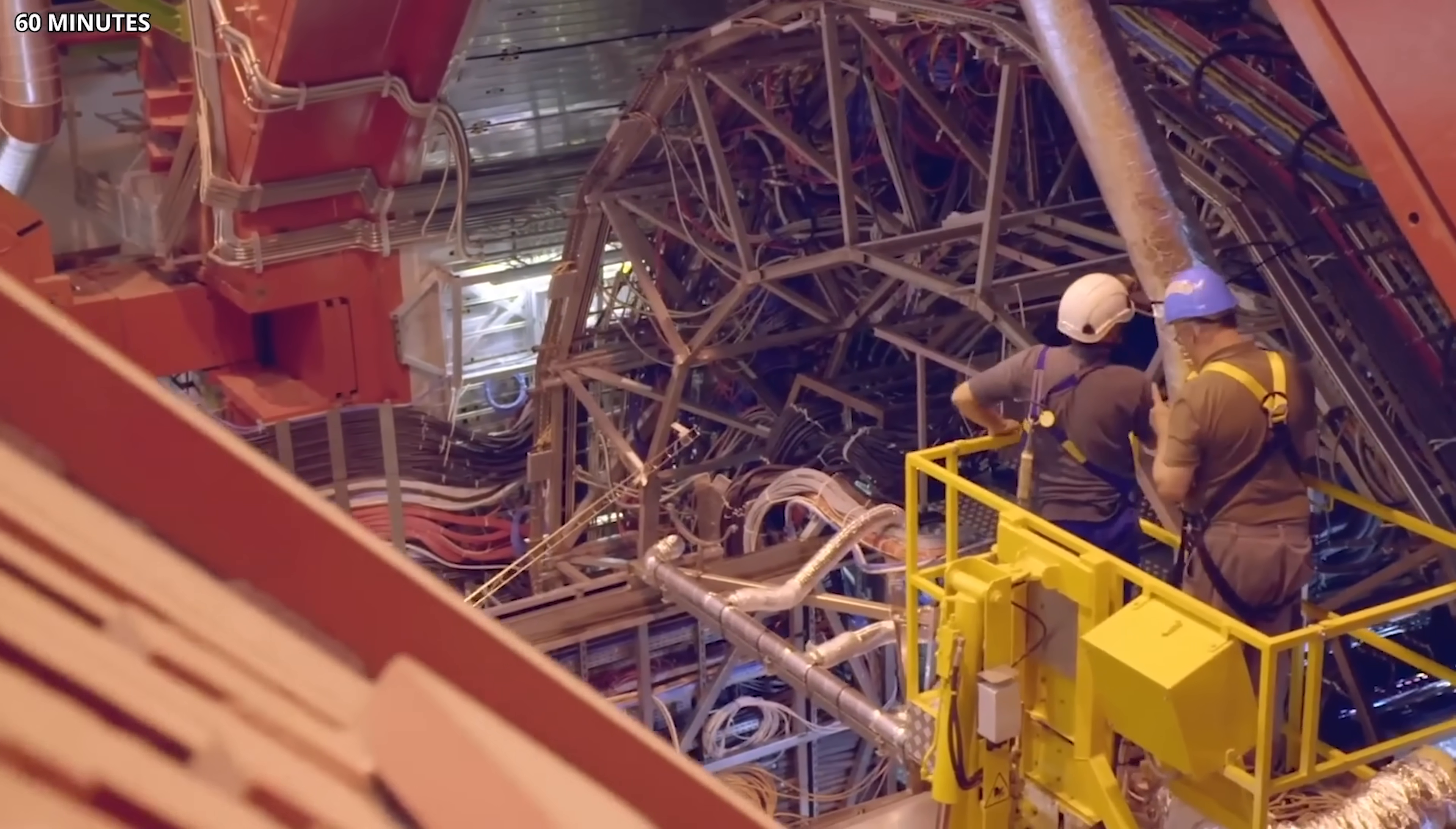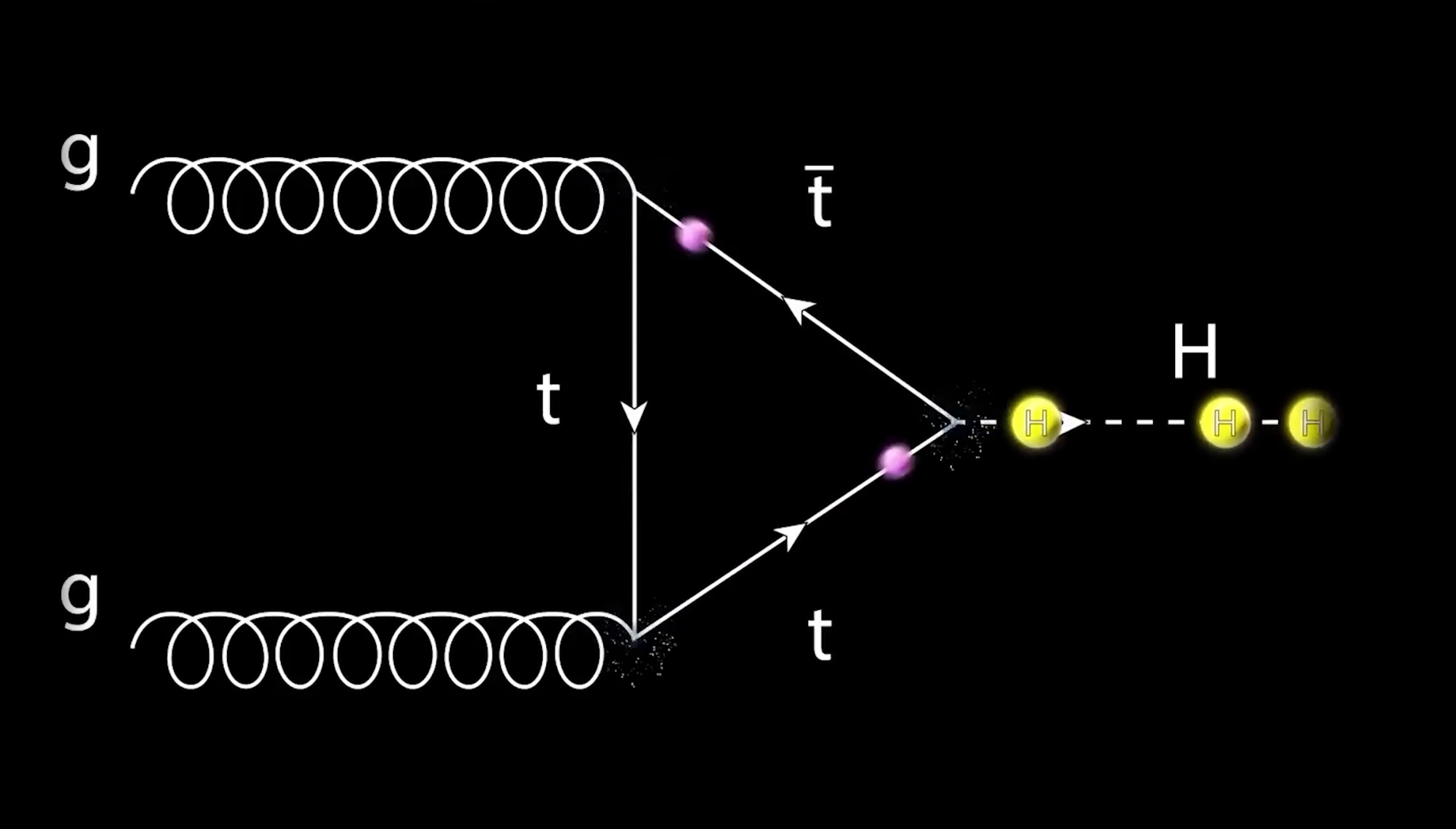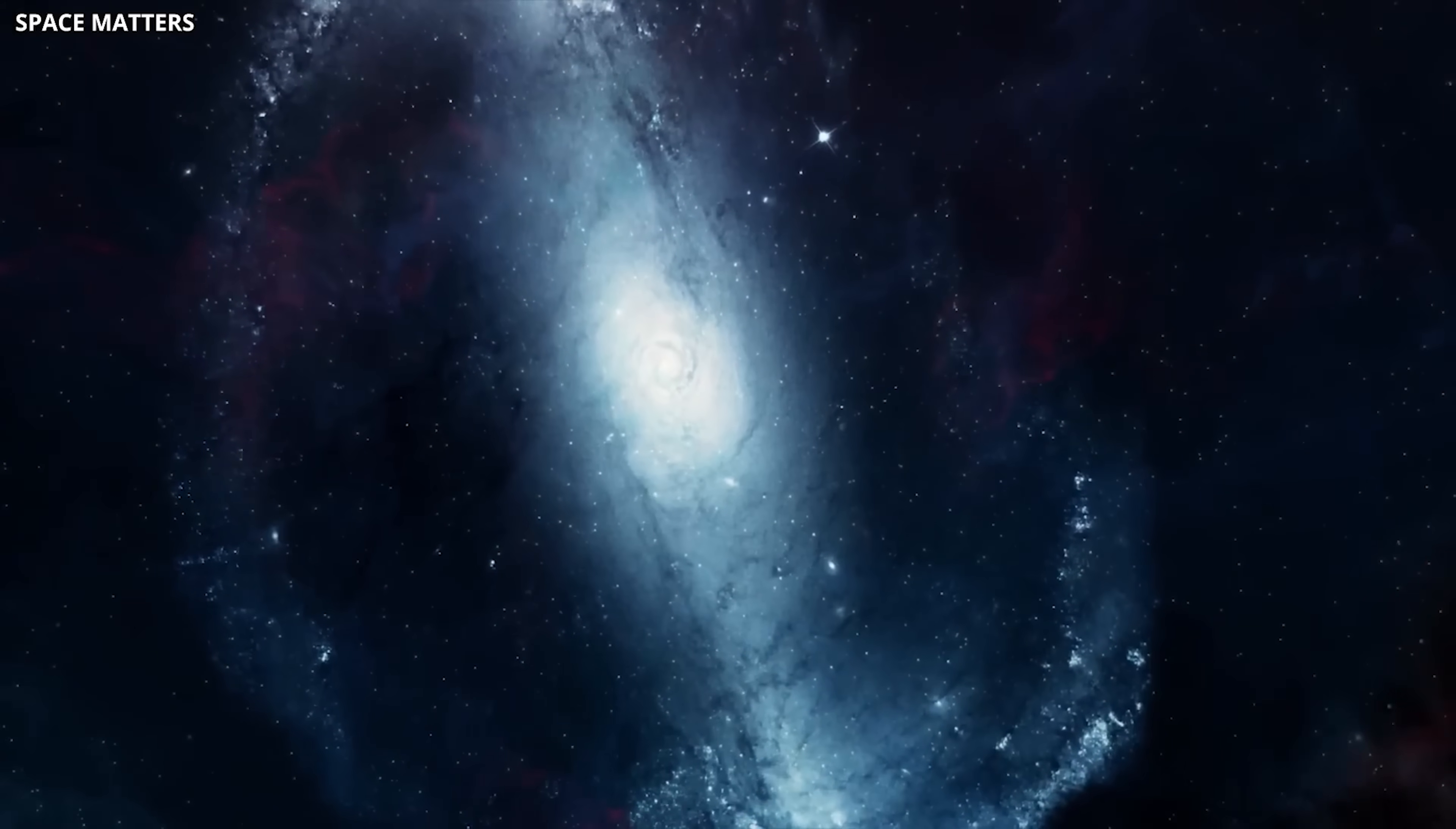So, what does this actually mean for us? This discovery is monumental because it's the first real proof that a tiny imbalance between matter and antimatter was actually real. In simple terms, right after the Big Bang, there were slightly more ways for matter to be created and survive than there were for antimatter. This tiny cosmic cheat code could be the only reason we live in a universe packed with stars and life instead of a totally empty void.